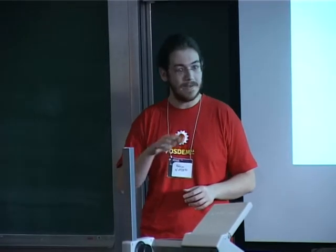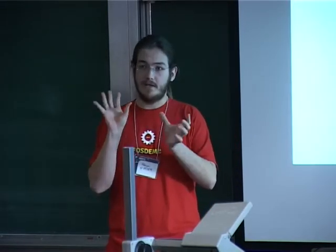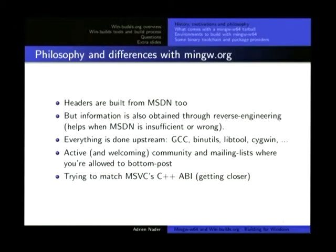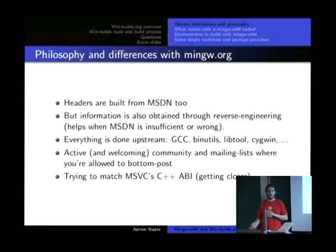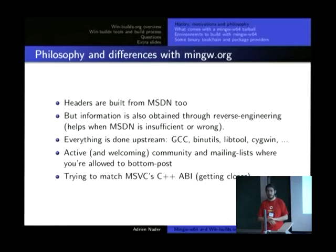But MSDN isn't exhaustive — it's not even correct sometimes — and especially when you go into the lower layers, you're going to have issues with it. That's why you can't easily reunite the headers from both projects. Another big difference: if you try to build something with MinGW.org, usually you couldn't just take the FSF GCC and everything from the website without adding some patches. With MinGW-w64, no patches are required. It can happen, but usually you're fine.